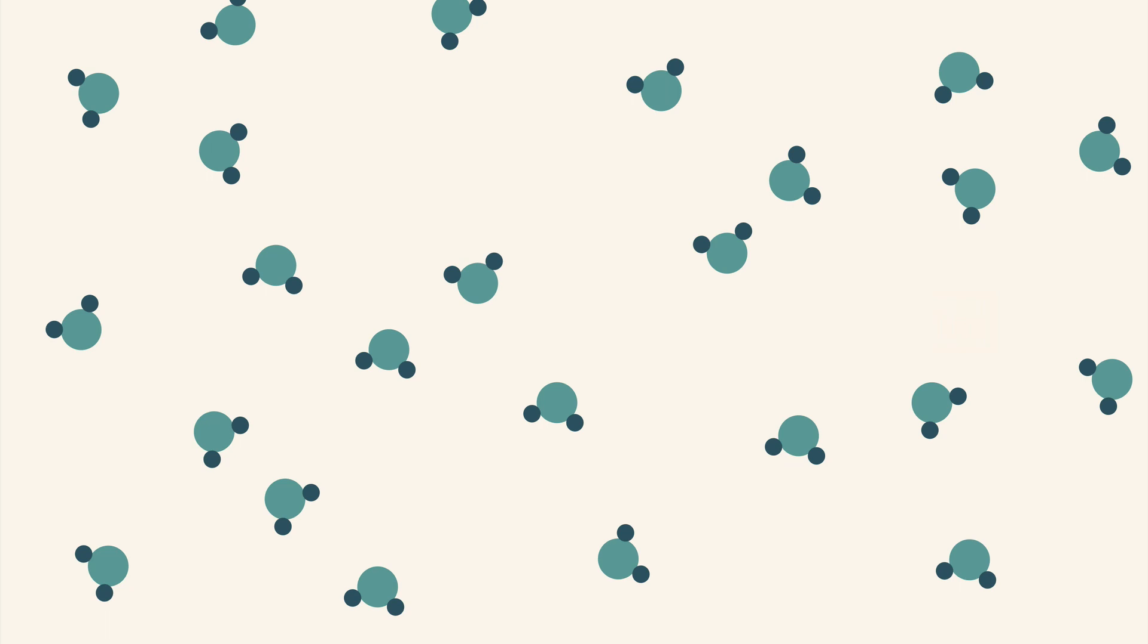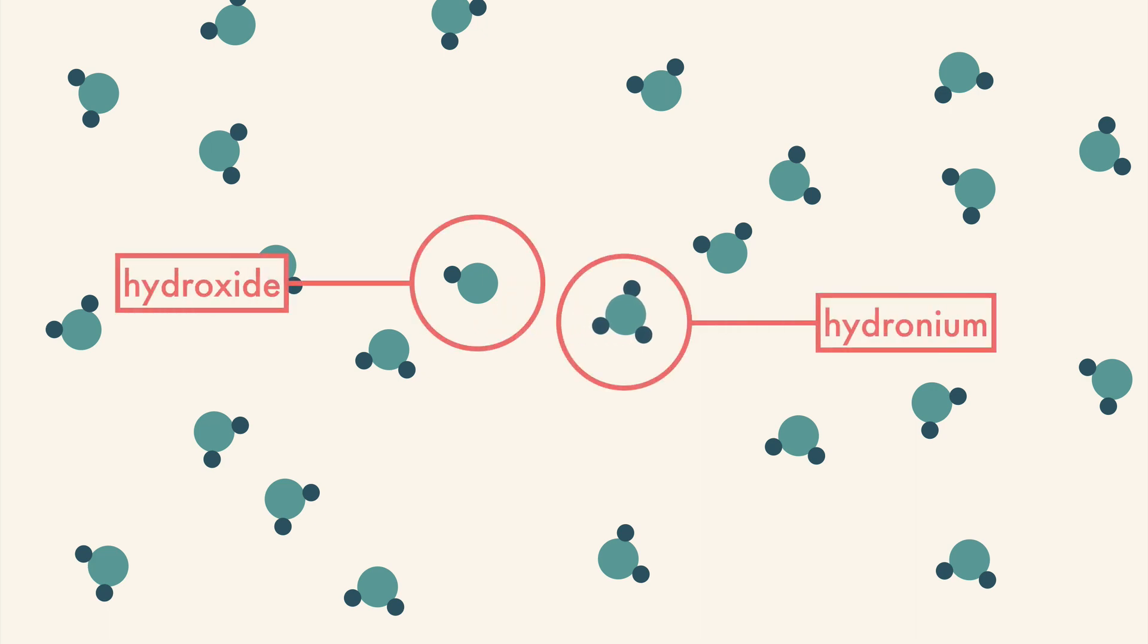Here's water. Most of the time you don't think of water as part of a reversible reaction, but it is. It's just on a really small scale. Some of the water molecules will give away one of their hydrogen atoms to another water molecule. This creates a hydroxide and a hydronium.